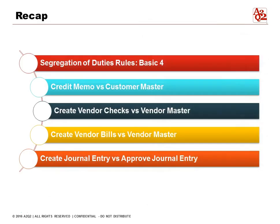To recap, we discussed the four basic rules: credit memo vs. the customer master file, create vendor checks vs. the vendor master, create vendor bills vs. the vendor master, and create journal entry vs. approve journal entry. Thanks so much for your time, and we'll talk to you in the next session when we go through the next detailed steps to complete this series. Have a great day!